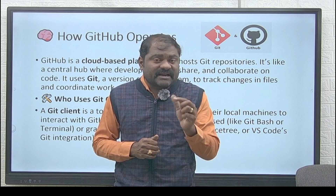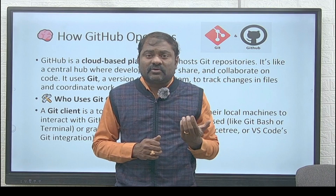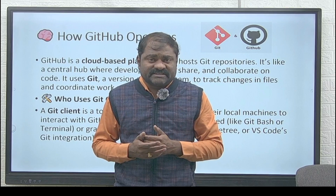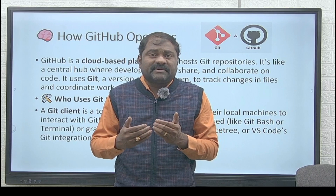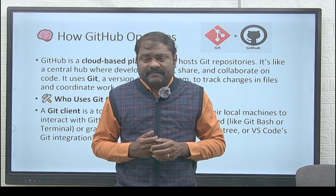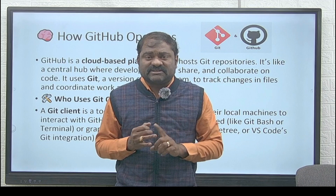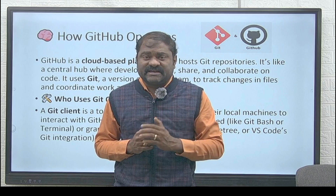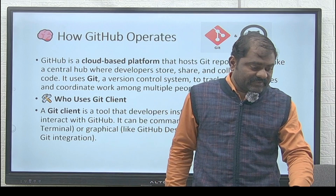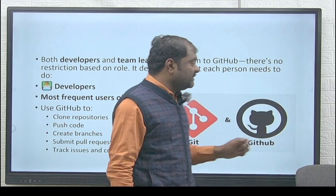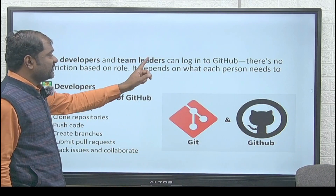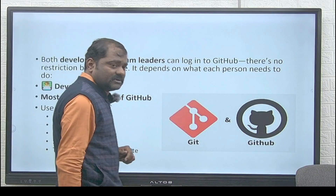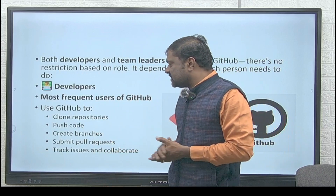The Git client is used to connect to GitHub, clone the code, make modifications, commit the changes, and push the modified code back to the GitHub repository. High-level management like team leaders and project managers connect directly to GitHub and perform operations like CI/CD integrations. Both developers and team leaders can log in to GitHub — there is no restriction based on role. It depends on what each person needs to do. Developers mostly use GitHub to clone repositories.